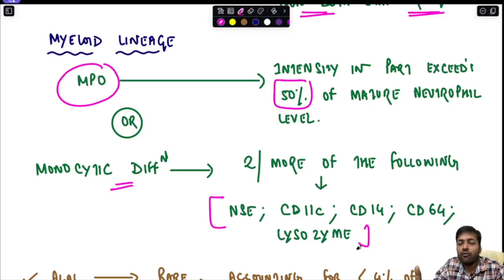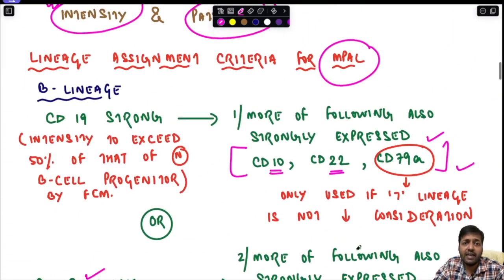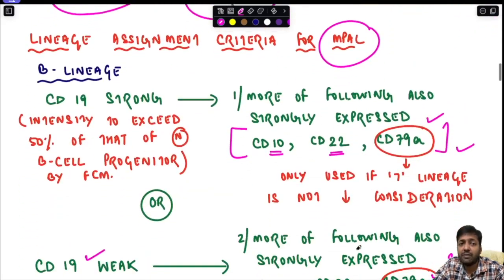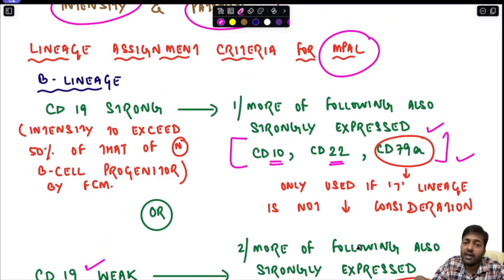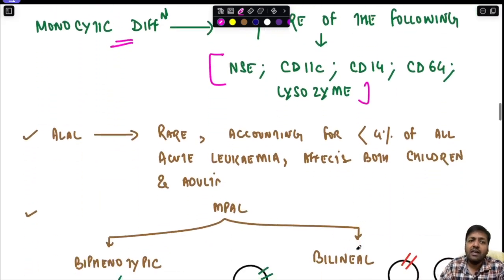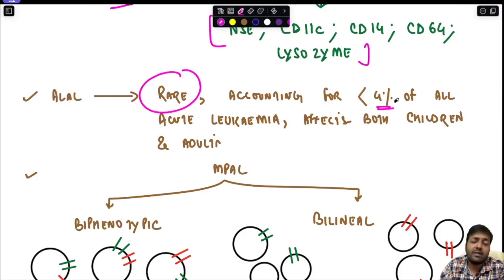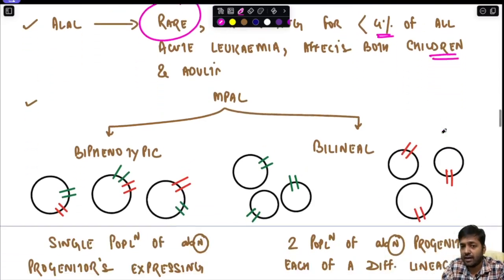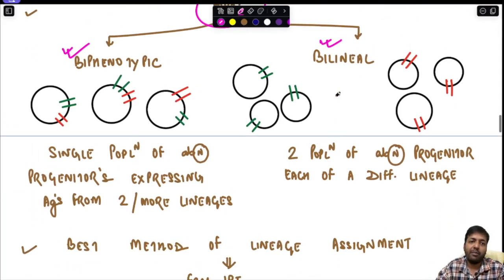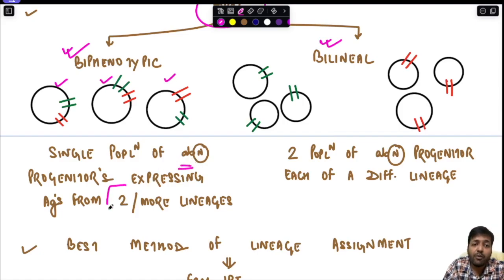When writing an exam answer on acute leukemia of ambiguous lineage, this classification must be written in detail without mistakes. Include the changes from the WHO fifth edition and the lineage assignment criteria exactly as given. Acute leukemia of ambiguous lineage is rare, accounting for less than 4% of all acute leukemias, and affects both children and adults.